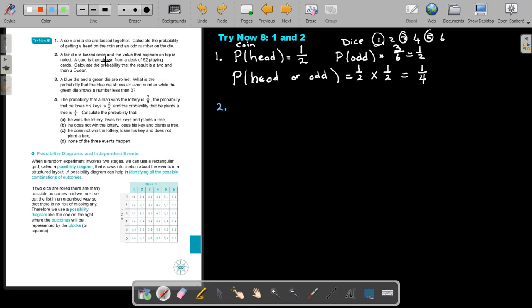A fair dice is tossed once, and the value that appears on top is noted. So it's again a dice, so if it's a dice, it's again my 6 numbers. A card is then, so remember my dice is having my 6 numbers: 1, 2, 3, 4, 5, 6. Okay,